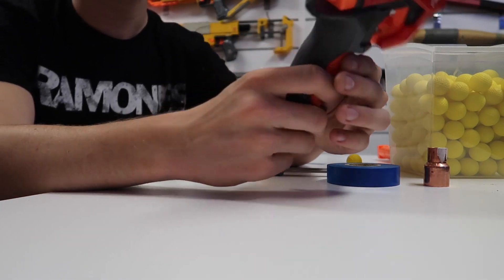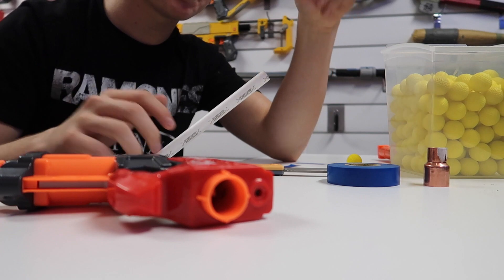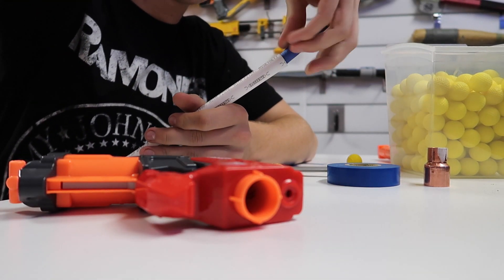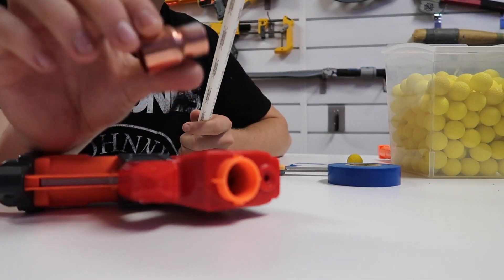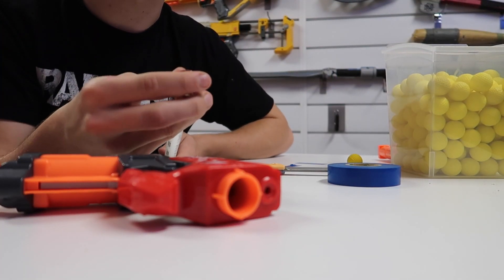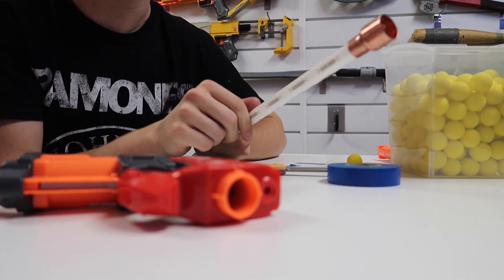So basically, how's this mod going to work? Well, this PEX pipe is the perfect size to house a Nerf dart. As you can see there. It also happens to fit quite well onto this coupling. As you can see, coupling slides over it, just like so.